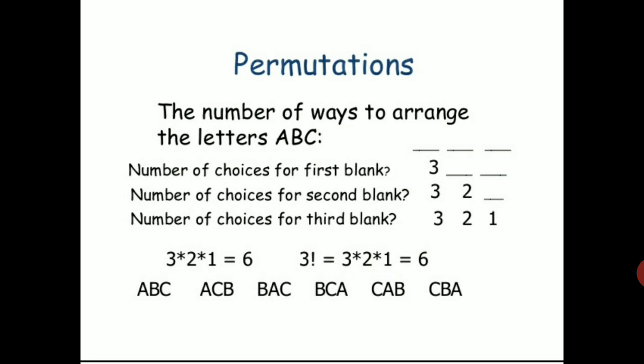The number of ways to arrange the letters A, B, C — three letters, three chairs. Here we are going to arrange the letters into the chairs. The number of choices for the first chair is 3.